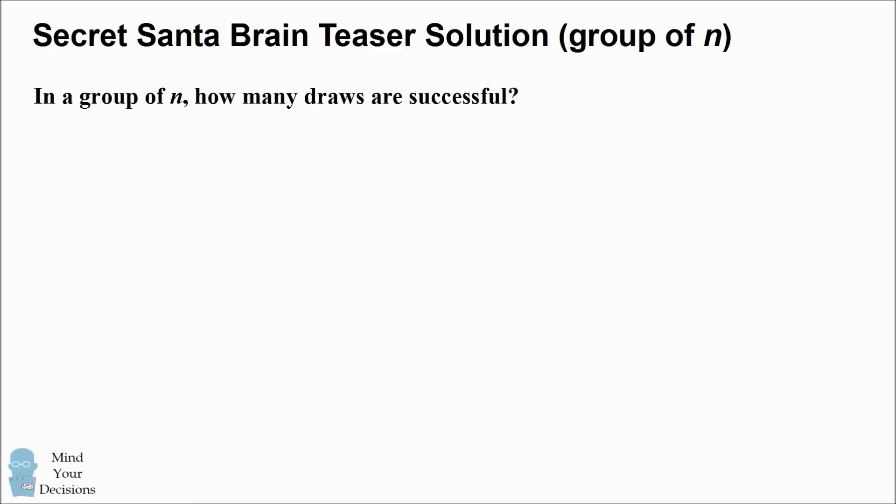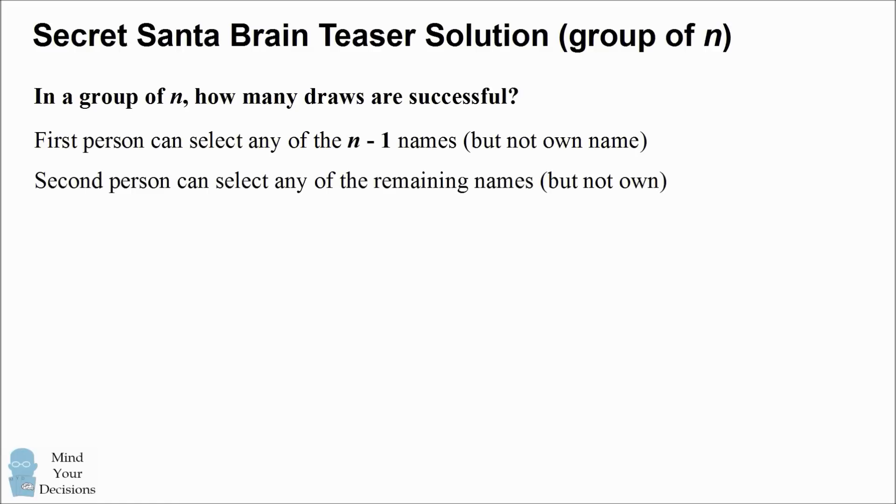Now we need to count the number of draws that are successful. So if you try and count this up, like the first person can select any of the n-1 names but not his own name, the second person can select any of the remaining names, hopefully not his own name, and hopefully that first person hasn't already selected his name. The very last person has one name remaining, and hopefully that name is not his own. So if you try and count this up, it's going to be kind of complicated, so it's going to be difficult to count.